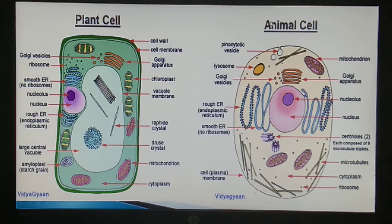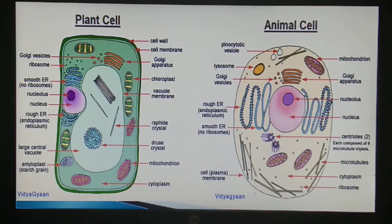Chloroplasts are absent in animal cells because animals are dependent upon plants for food and do not need to prepare their own food. But plant cells have to prepare their own food with the help of sunlight and chlorophyll through the process of photosynthesis. The first difference: animal cell has plasma membrane, plant cell has cell wall. Chloroplasts are present in plant cell but absent in animal cell.